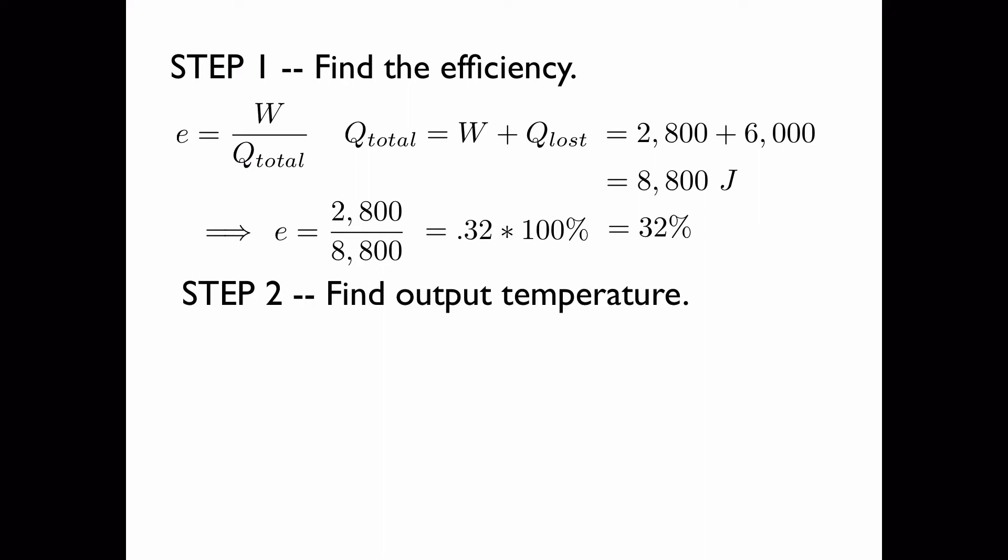Now we'll find the output temperature, supposing that the heat engine is ideal. We have the temperature for the hot reservoir, which was given in the previous slide, to be 800 Kelvin.